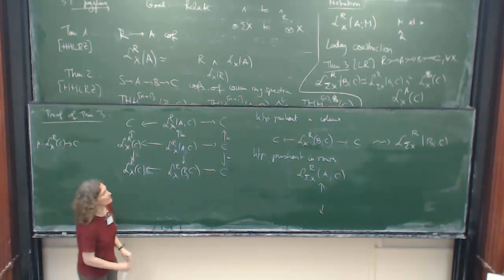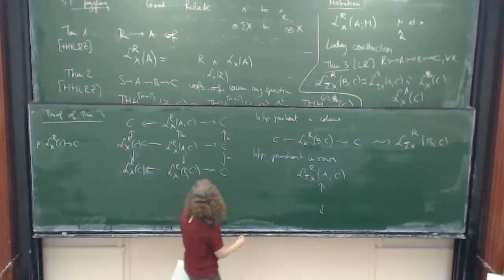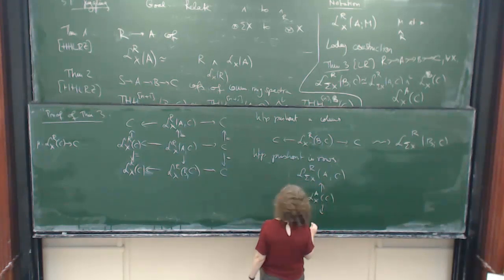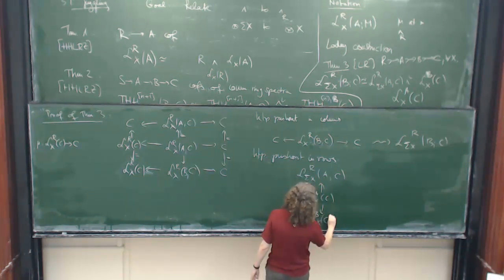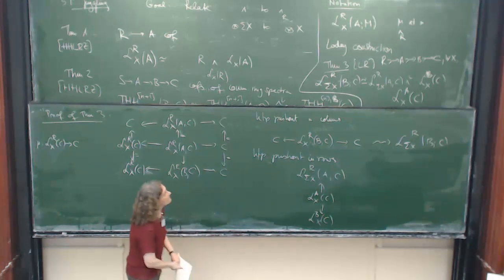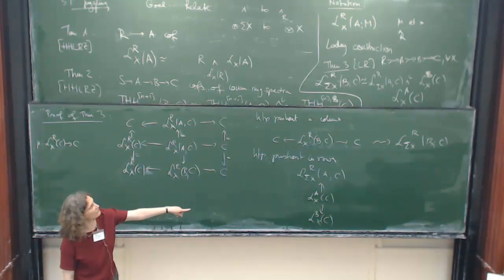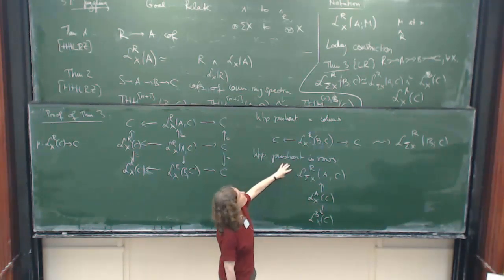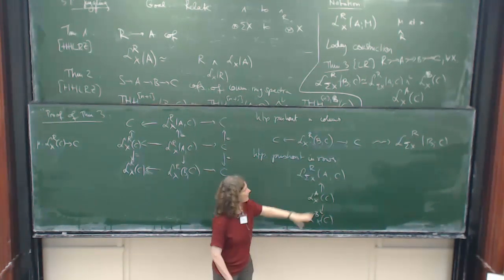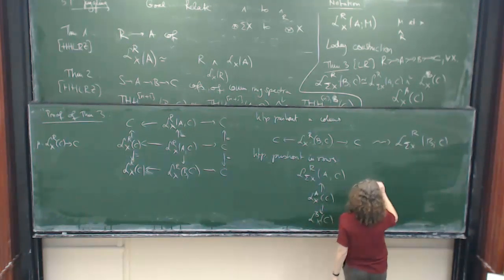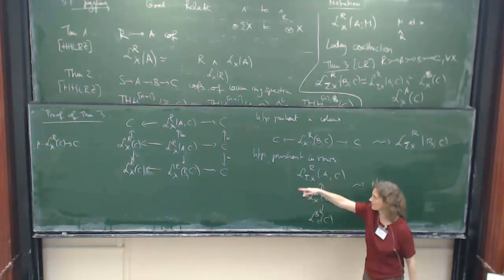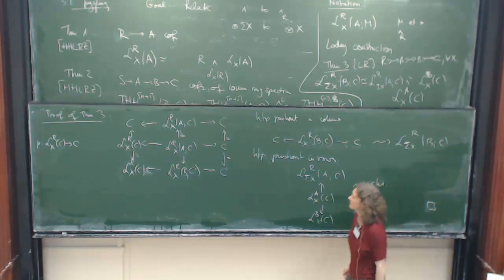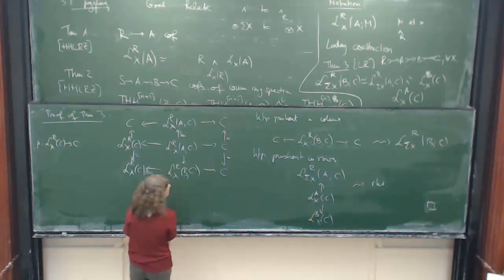Here you collapse A down to C because this maps A first to C and then collapses it via the multiplication map. So this just gives you relative THH, relative Loday of A and C. And down there you get relative Loday of B and C. And then if you form the homotopy pushout, this is hopefully what's there. So I usually forget an R, but that seems okay. So we get the, this gives the right-hand side. And this diagram commutes, so you get the same. Once you prove one thing in every talk, so that was it.